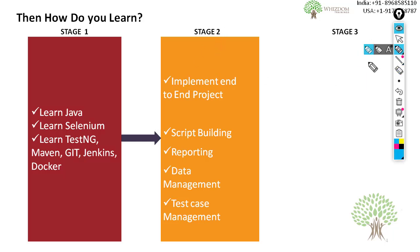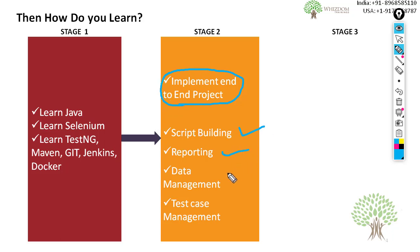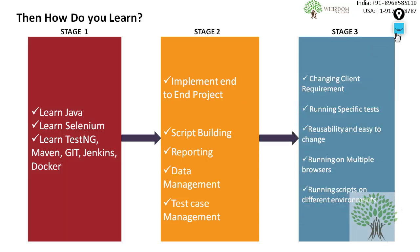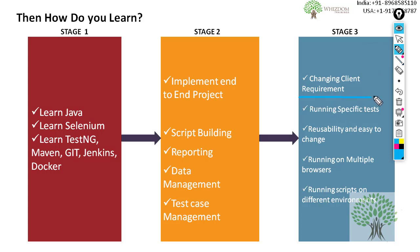In stage two, you can go and learn how to implement an end-to-end project or a framework by building the scripts. You need to implement reporting, managing data, test case management, and other things. But most importantly, the most important stage is stage three, wherein you need to understand how you cater to the changing client requirements.